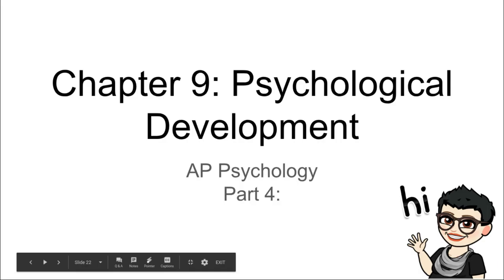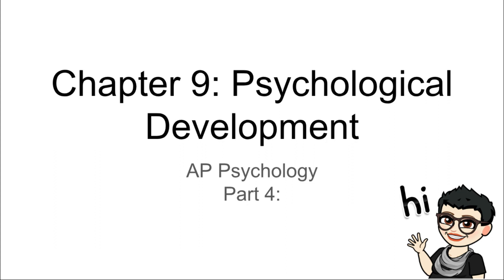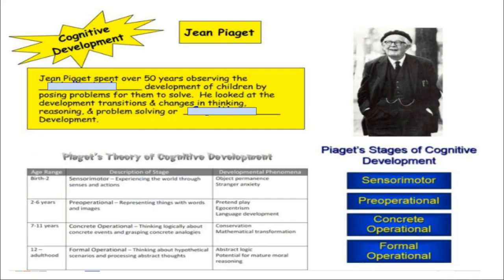Hello AP students, this is Mrs. Politski and I have notes for Chapter 9, Psychological Development Part 4. We're going to talk about cognitive development to start with. Jean Piaget, who you see pictured to the right, spent over 50 years observing intellectual development of children by posing problems for them to solve. He looked at development transitions and changes in thinking, reasoning, and problem solving — what we would call cognitive development.